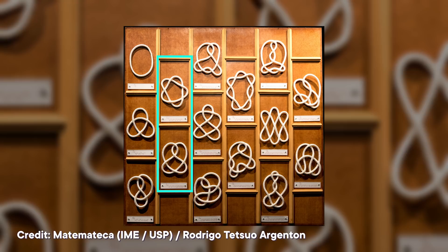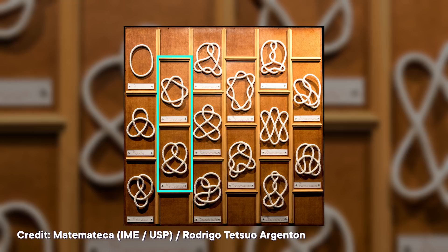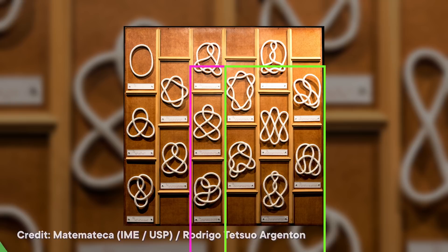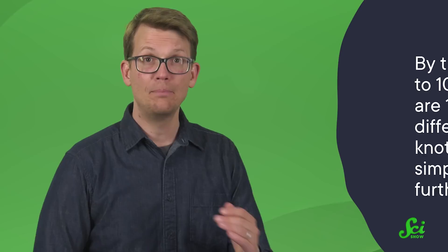But from five crossings upwards, things get more complicated. There are two different knots with five crossings. No matter how much you move them around, it's impossible to turn one five-crossing knot into the other. Similarly, there are three unique knots with six crossings, seven knots with seven crossings, and after that, the numbers start getting out of hand. By the time you get up to ten crossings, there are 165 completely different, unique knots that can't be simplified any further.